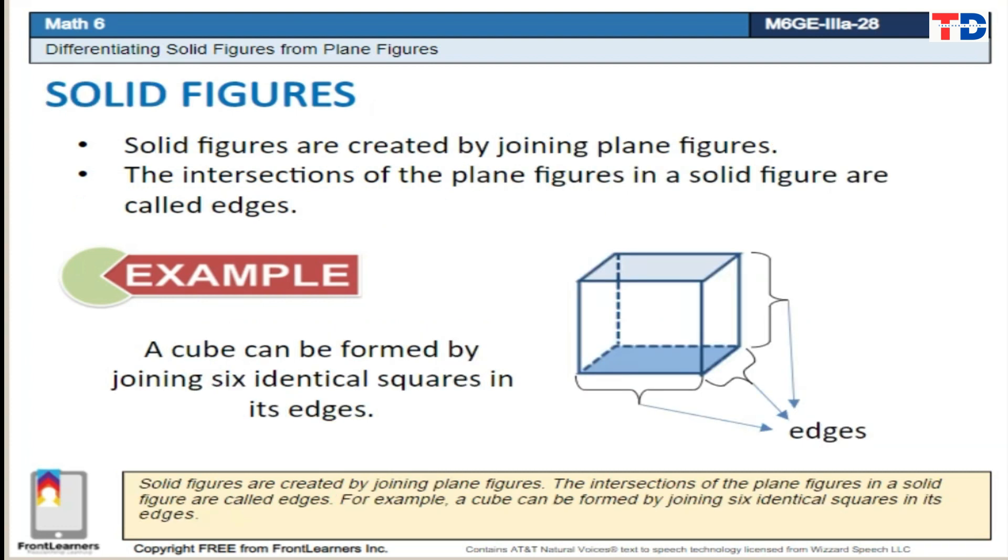Solid figures are created by joining plane figures. The intersections of the plane figures in a solid figure are called edges. For example, a cube can be formed by joining six identical squares in its edges.